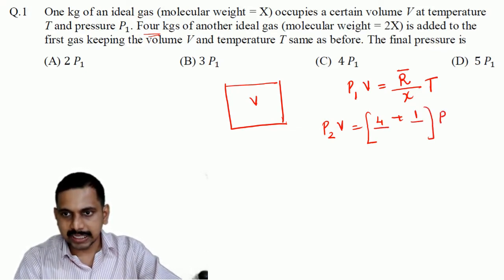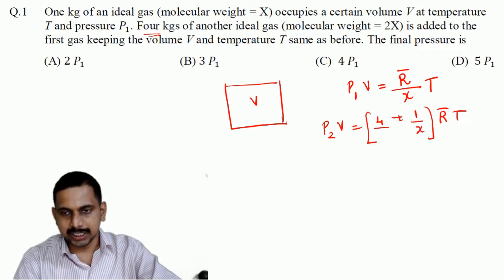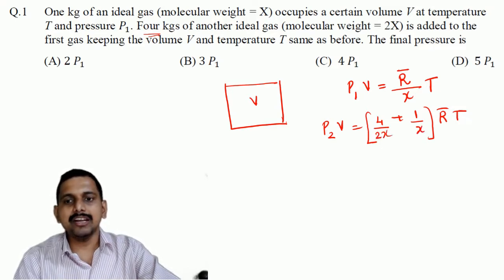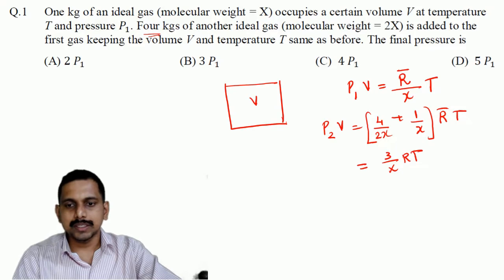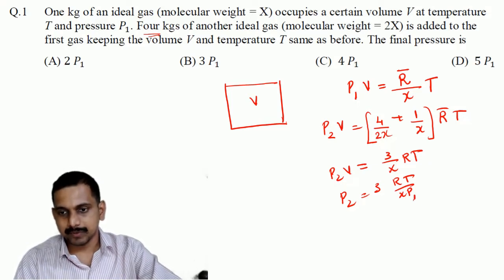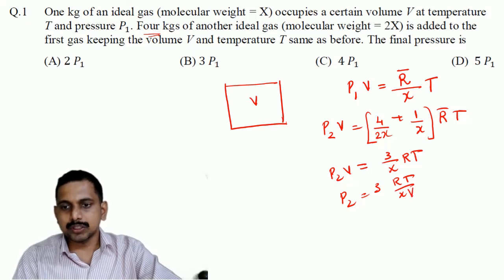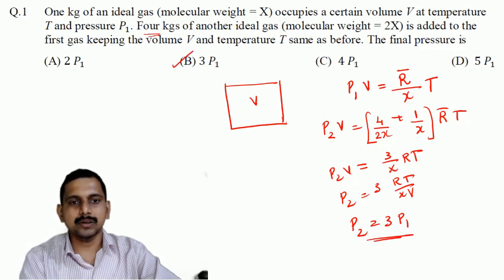With R and temperature, instead of multiplying 1 by X, we are adding 1/X and 4/(2X). When we add all these terms we get 3/X into RT, which equals P2·V. So P2 equals 3·R·T·(X/V), and since RT/XV is actually P1, this becomes P2 equals 3·P1. The answer is option B.